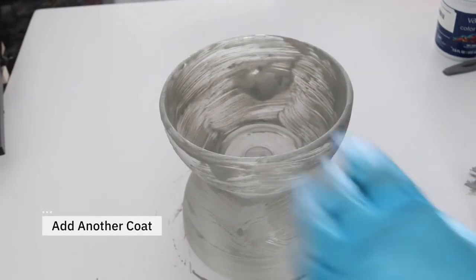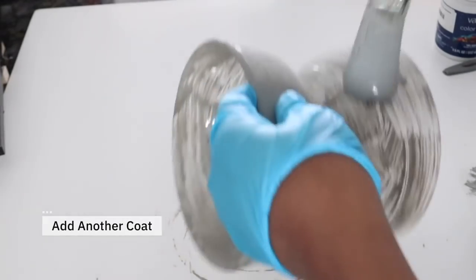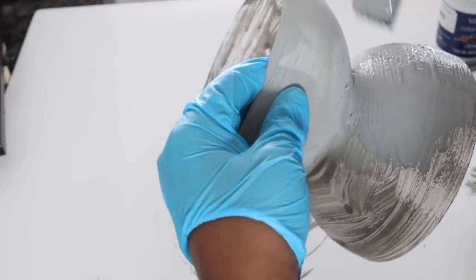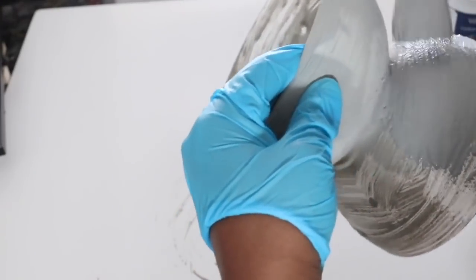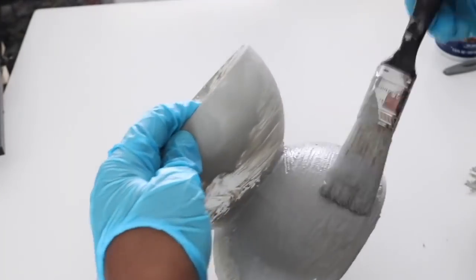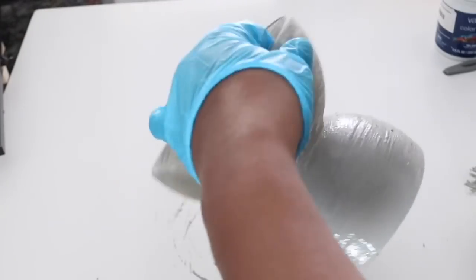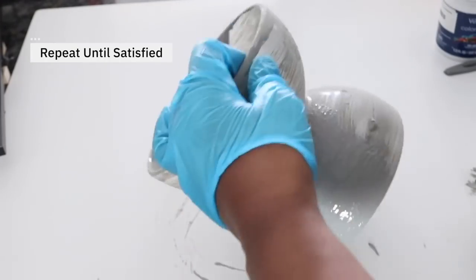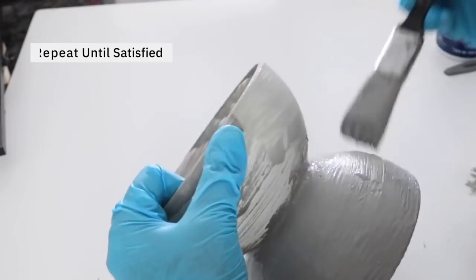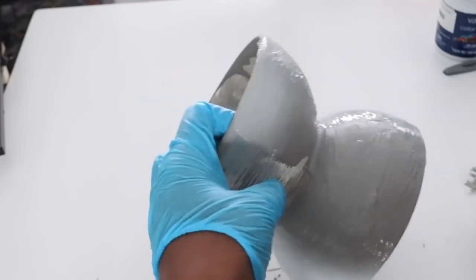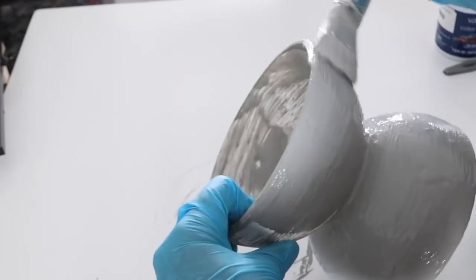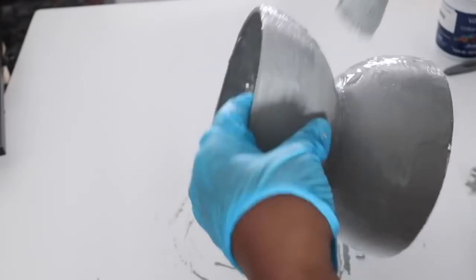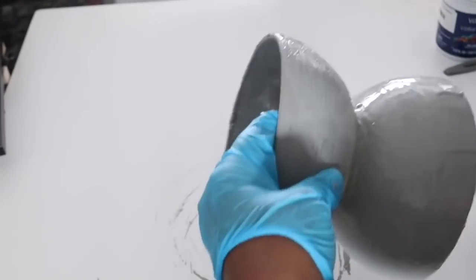Okay, so now that the first layer has dried, I am going to apply a second layer. And you can repeat the same process until you get the look that you desire. For me, I applied three layers. And so what I'm going to do is just let it dry for 24 hours and then I am ready to put in my plant.